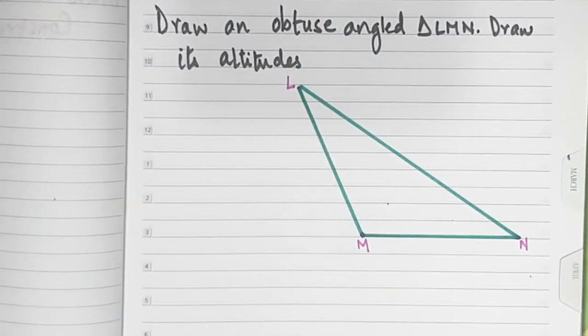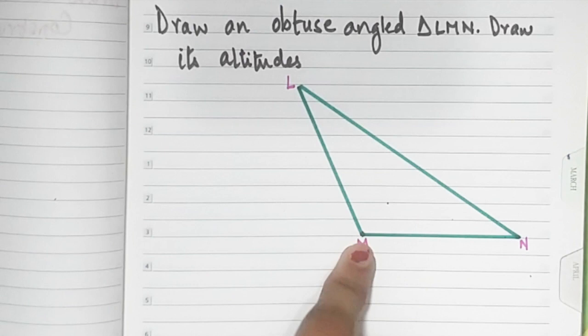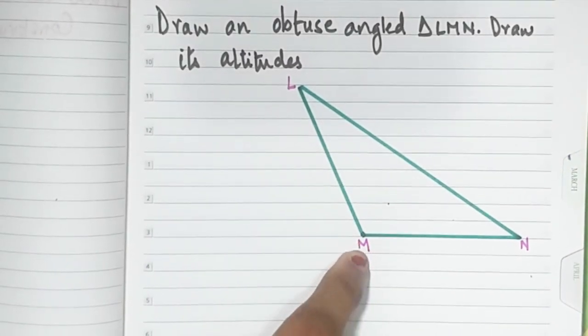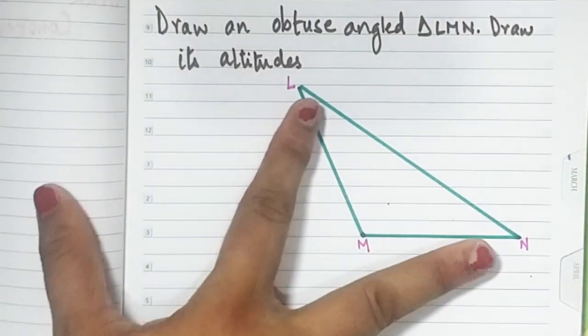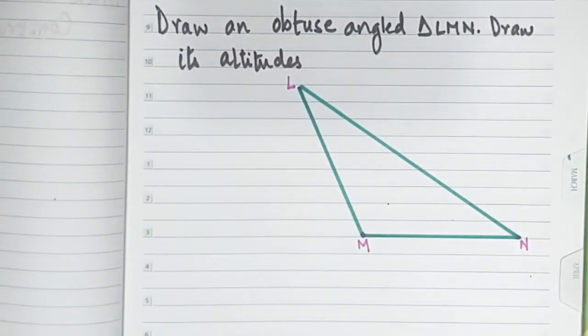Let's construct all its altitudes. First, we'll draw an altitude from point M because that's the easier one. Then we'll draw the remaining two. I'll show you how to draw them.